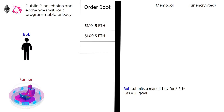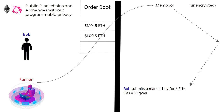Now we introduce our front-runner into the equation. The front-runner is constantly parsing through the publicly visible mempool for opportunities to arbitrage. The front-runner realizes that with the current orderbook, and with Bob's soon-to-be-executed transaction, there is an opportunity for riskless profit at the cost of Bob.